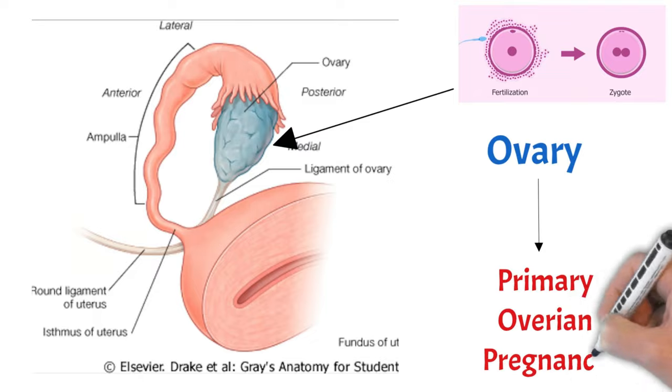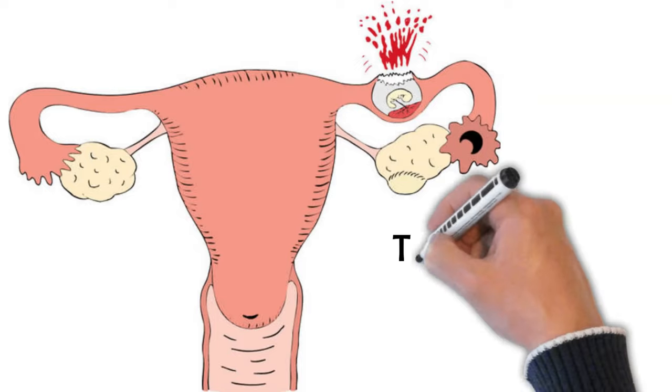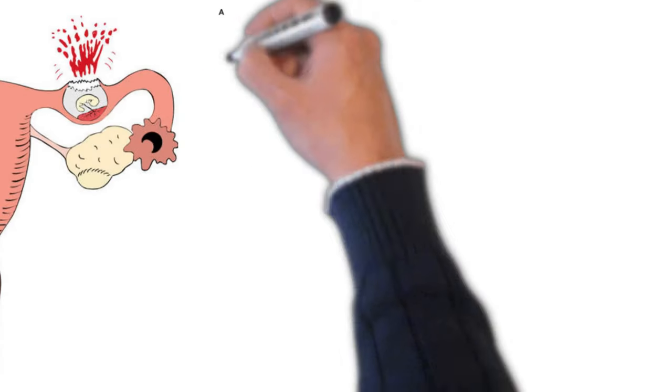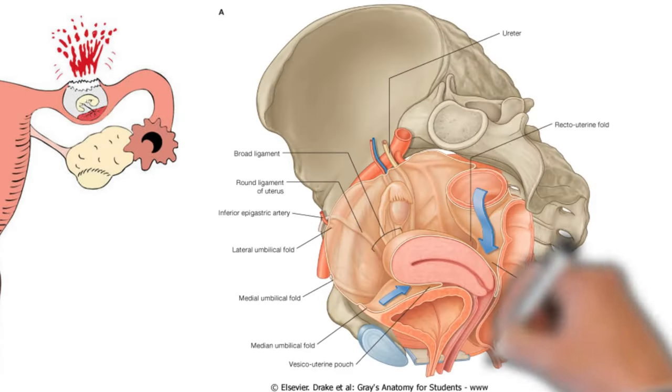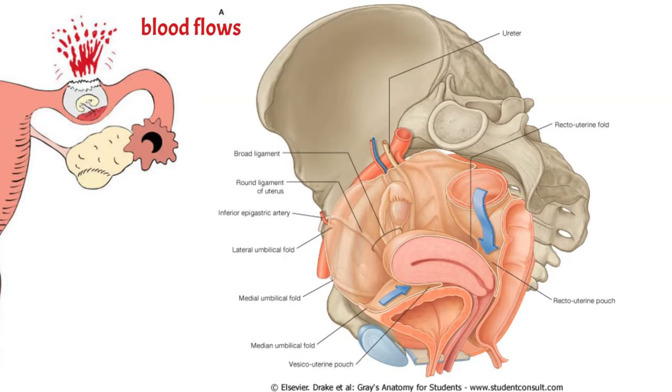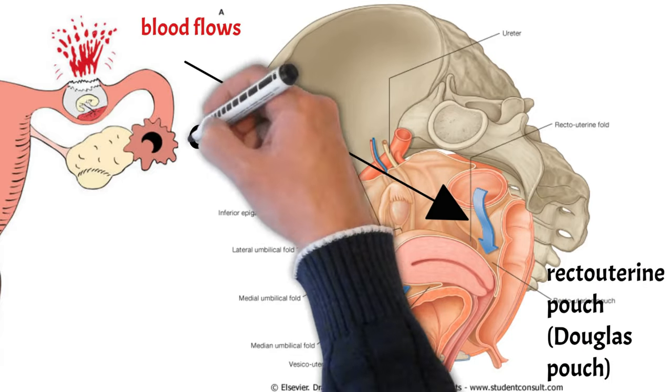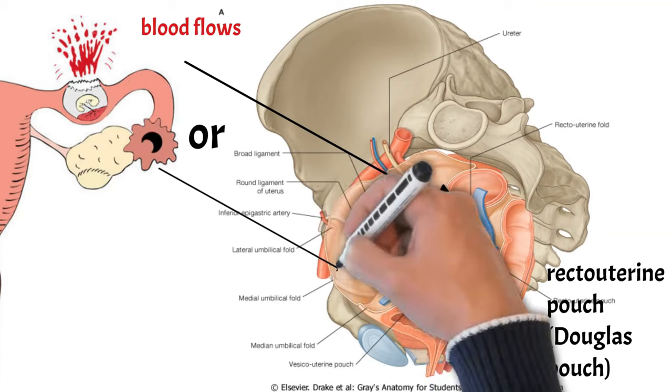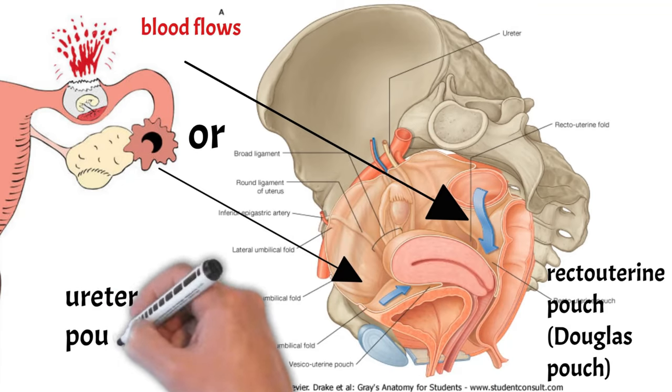In the case of the uterine tube, the ectopic pregnancy usually develops for no longer than 6 to 8 weeks before the tube ruptures. Rupture of the uterine tube or tubal abortion results in severe hemorrhage. The blood flows down into the recto-uterine pouch (Douglas's pouch) or into the utero-vesical pouch — folds of the peritoneum posterior and anterior to the uterus respectively.